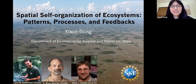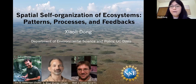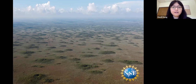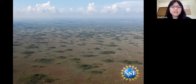Thank you Aurora for the introduction and thank you everyone for coming to my talk and this opportunity to talk about my research. What I'm going to talk about is pattern formation — mostly work I did as a postdoc at Duke University in collaboration with Jim Heffernan and Brad Murray at Duke, and Matt Cohen from University of Florida. The spatial pattern I'll focus on is this landscape: Big Cypress National Preserve in South Florida, where you see green mounds scattered across the landscape called cypress domes. They are evenly spaced, and this NSF project was trying to figure out the mechanism causing this spatial pattern.